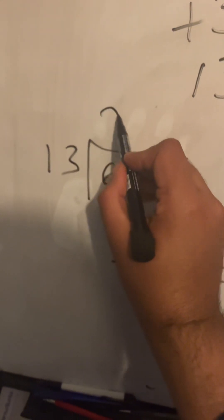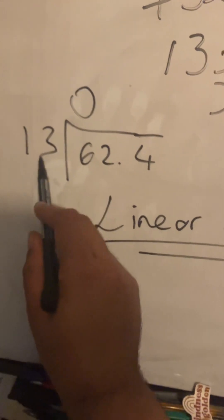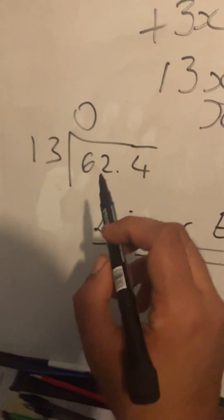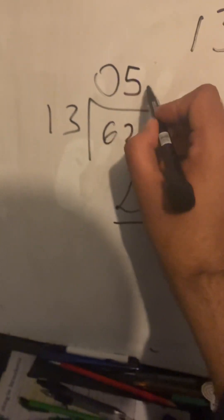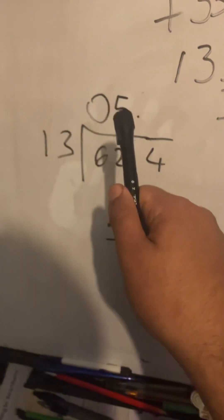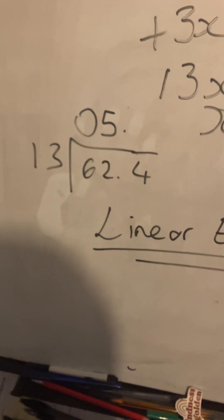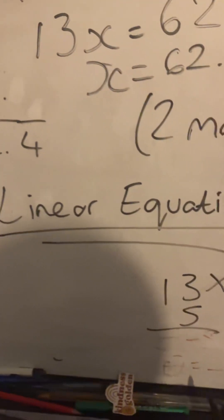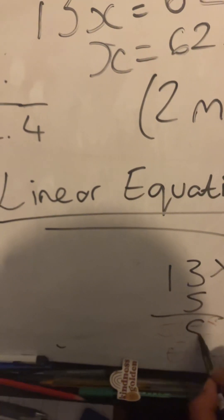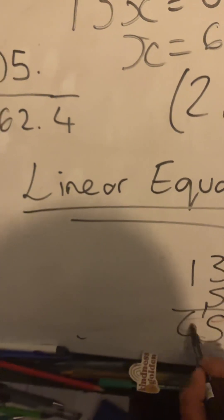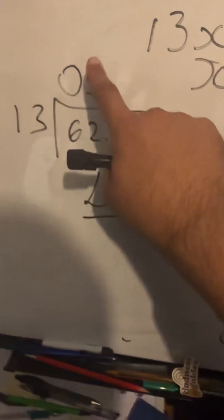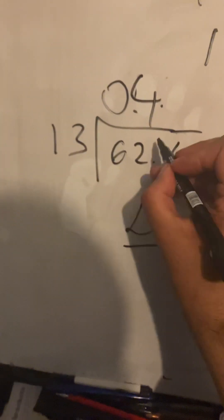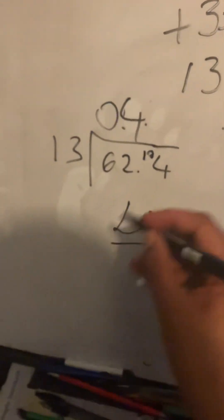Well, 13 into 6 I can't do. 13 into 62, that's going to go 4 times, I believe—sorry, 5 times. Let me double check. 13 fives are going to be 65, sorry. So it should be 4. That'll be 52, remainder 10.